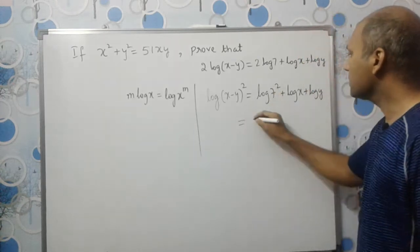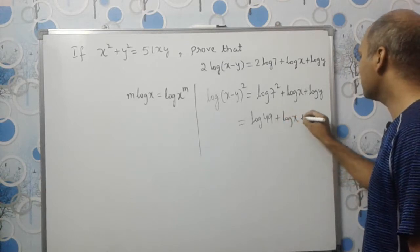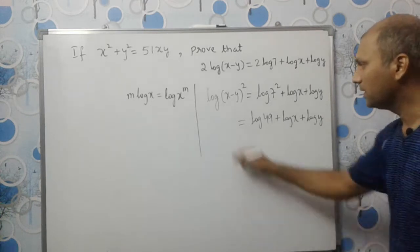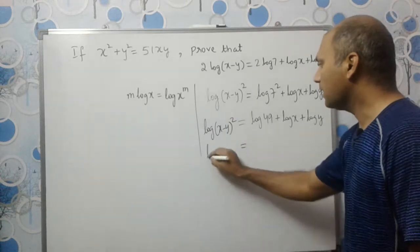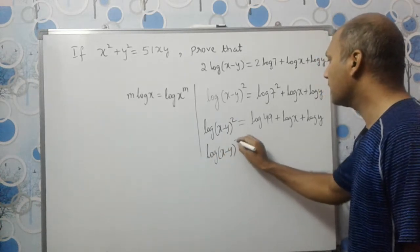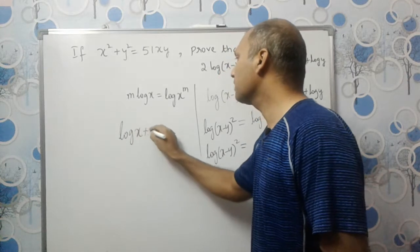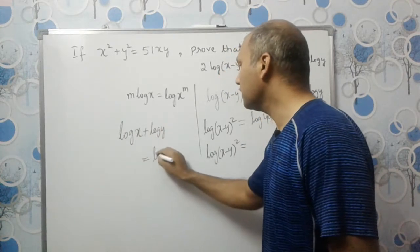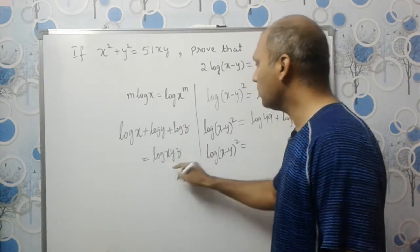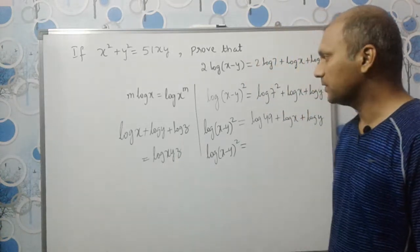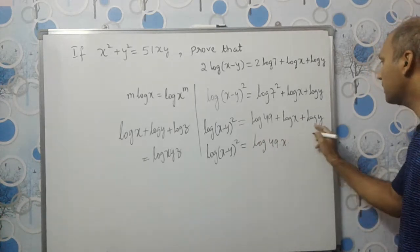7² is 49, so we have log 49 + log x + log y. Now since we have all plus signs, we use the identity log x + log y = log(xy). So this becomes log(49 · x · y).